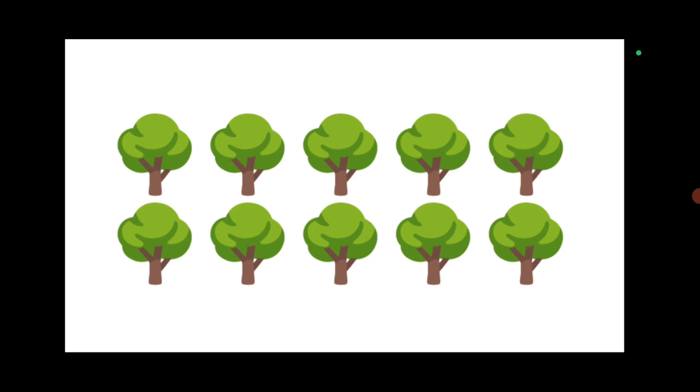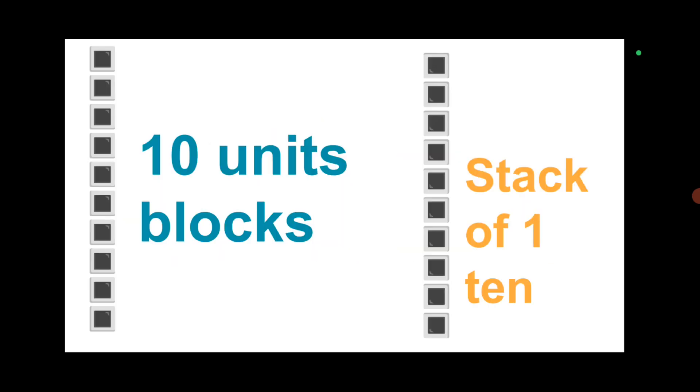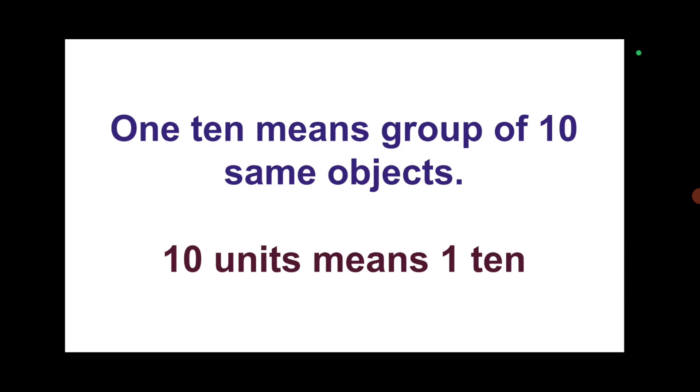Balloons are also in a group of ten — one ten. Caps are given, caps are also in a group of ten. The same object when ten units are there — one, two, three, four, five, six, seven, eight, nine, ten — they are one ten. Trees are here, similar trees are given in the picture, so it is one ten. Blocks are given, single blocks, ten unit blocks — stack of one ten. One ten means group of ten same objects. Ten units means one ten.